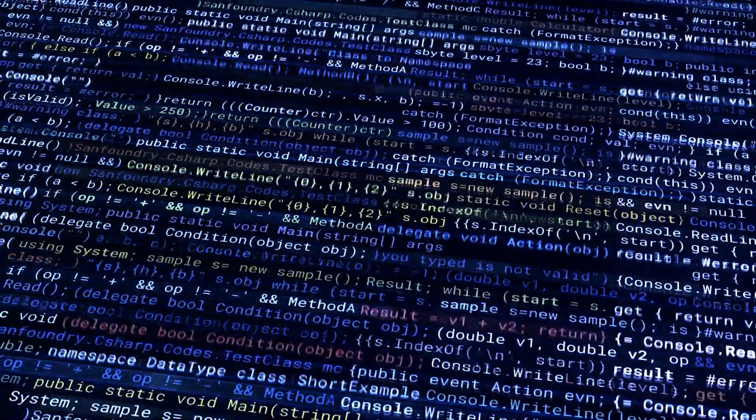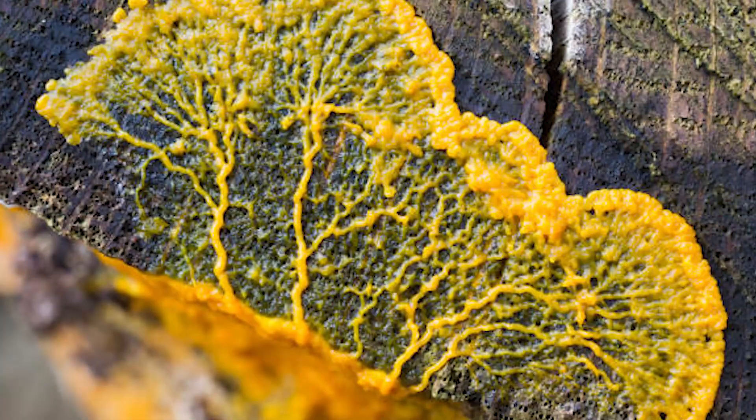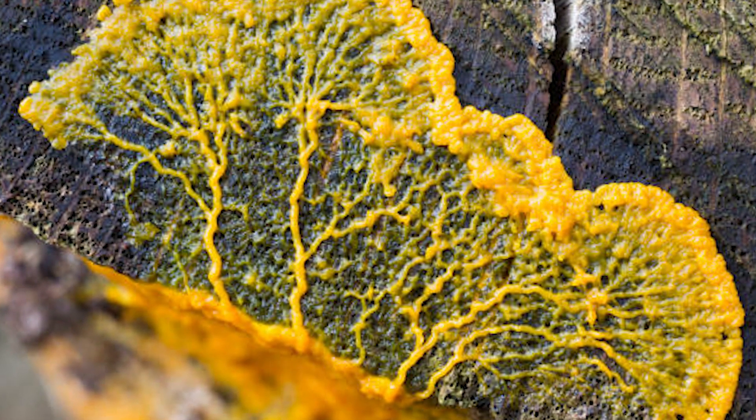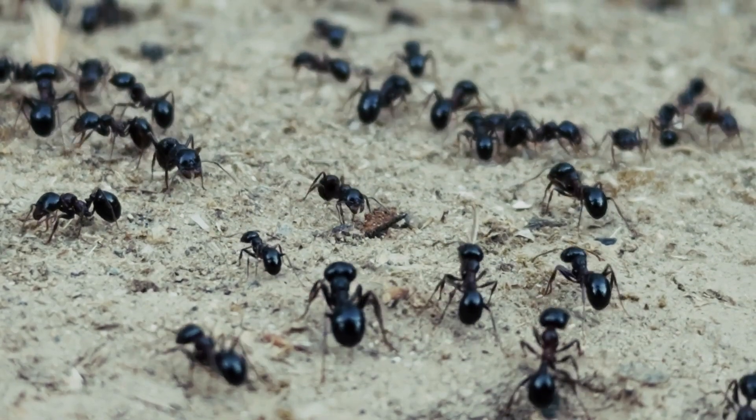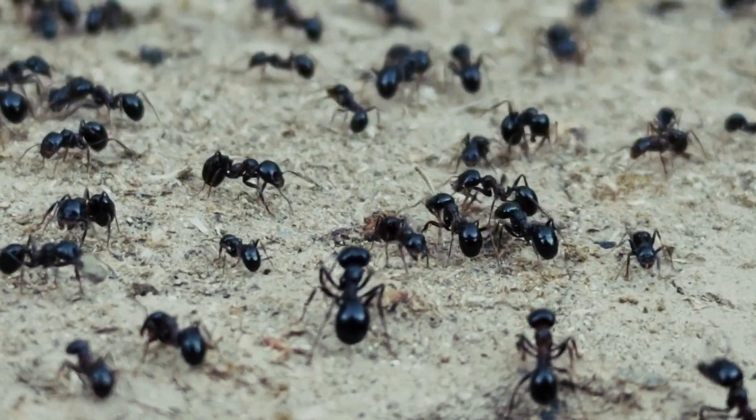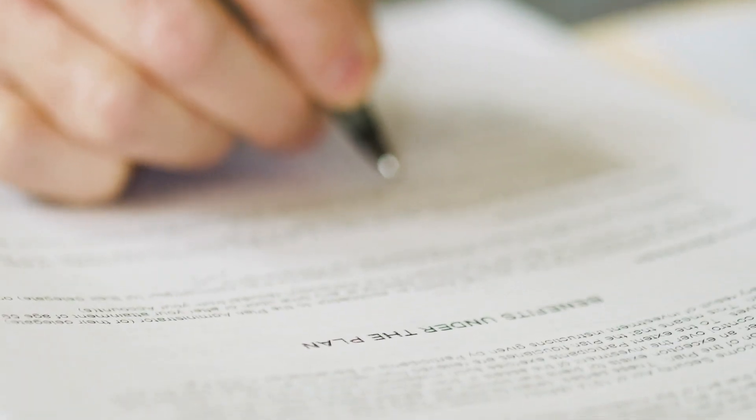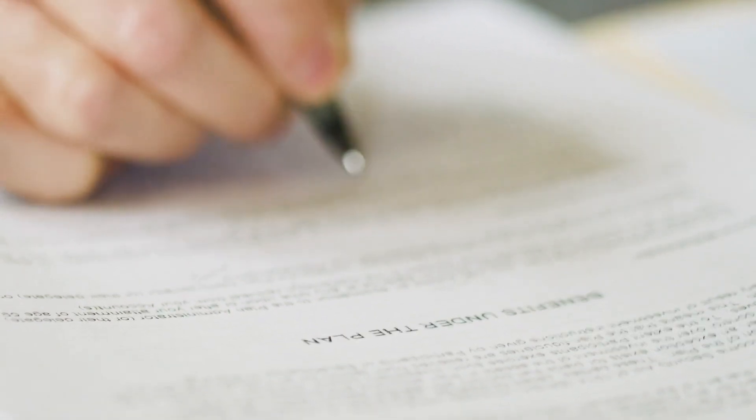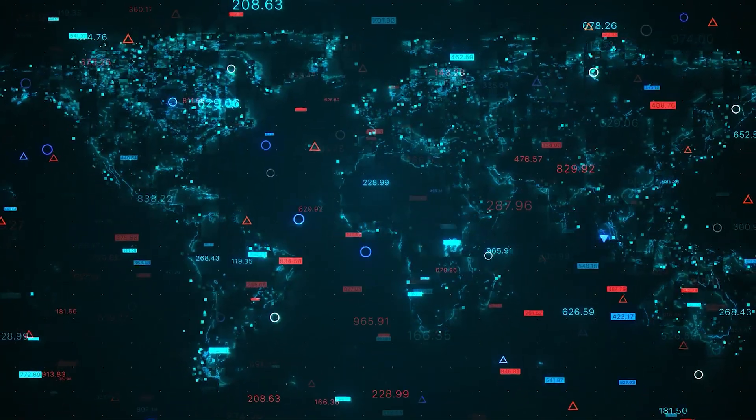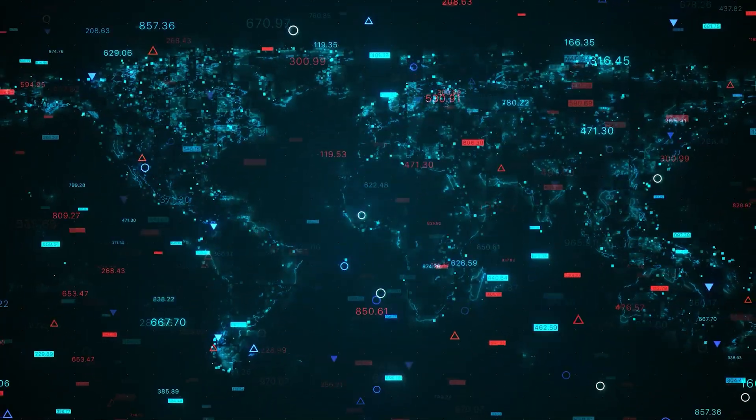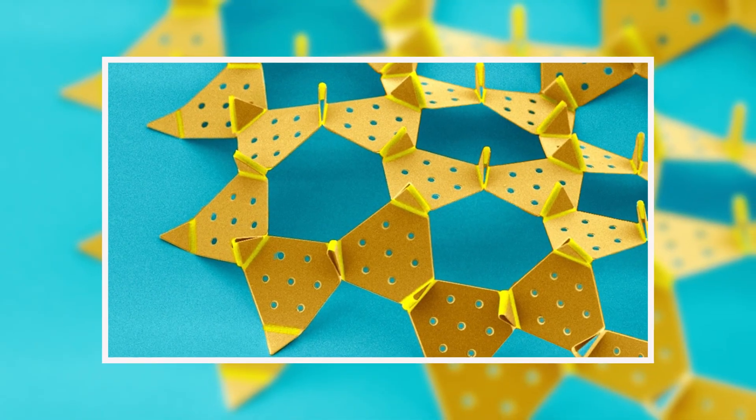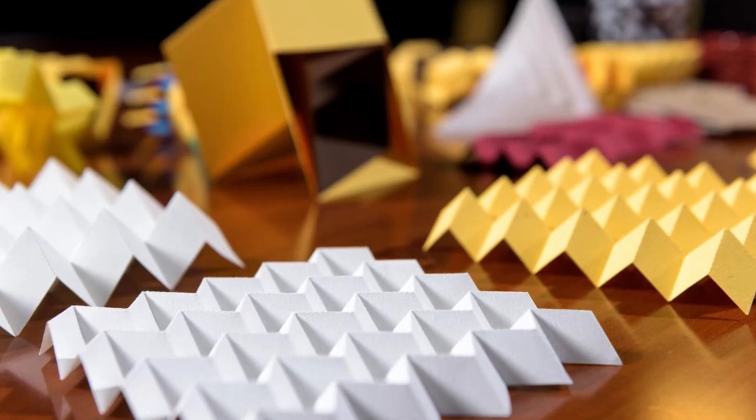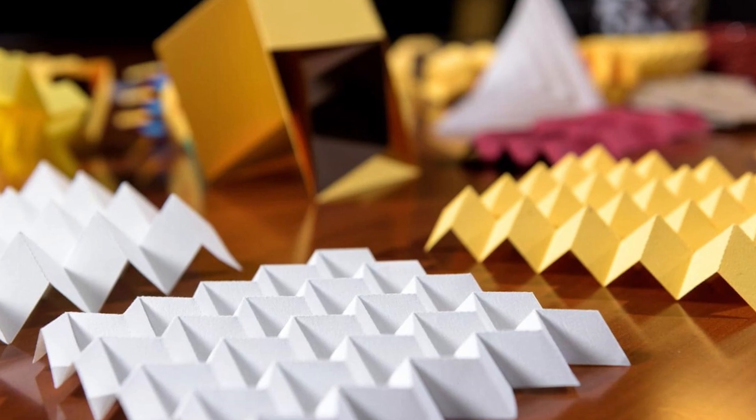Like how slime molds solve mazes without brains, or how ants coordinate colony behavior with just pheromones. These models offer inspiration for how simple rules and local interactions can create global coordination, but it's still mostly theoretical. Right now, metabots can be made to walk or twist, but they're a long way from handling real-world unpredictability on their own.